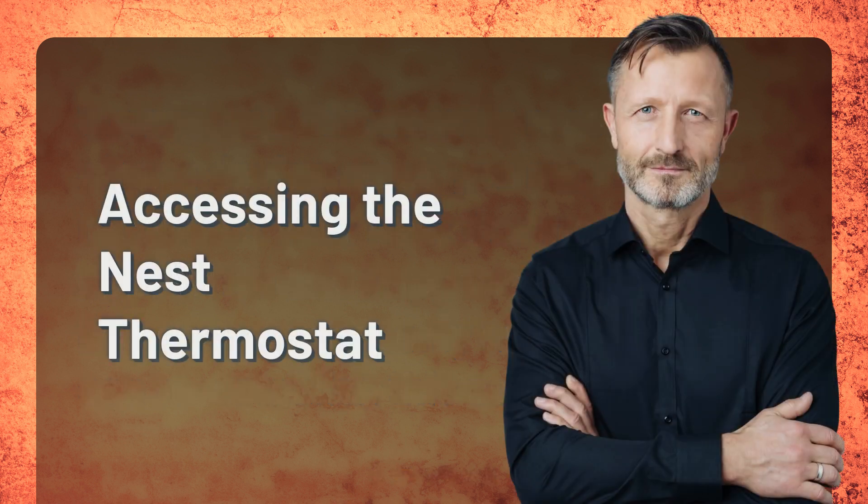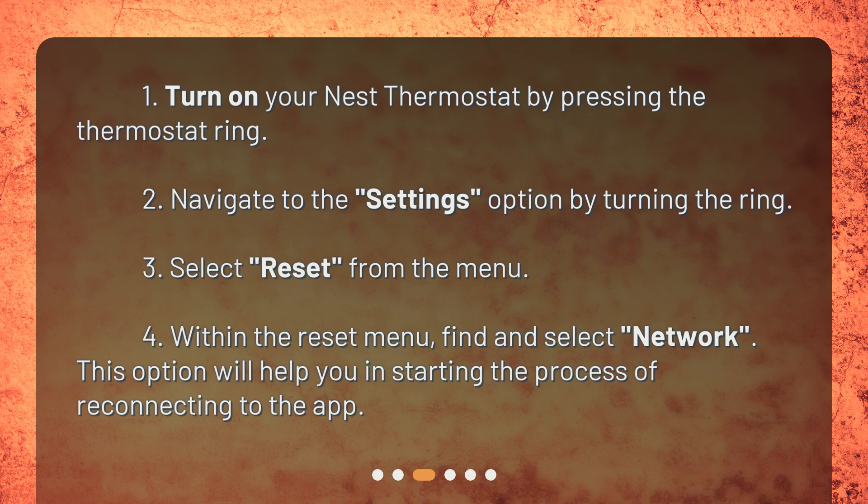Accessing the Nest thermostat: 1. Turn on your Nest thermostat by pressing the thermostat ring. 2. Navigate to the Settings option by turning the ring. 3. Select Reset from the menu. 4. Within the Reset menu, find and select Network. This option will help you in starting the process of reconnecting to the app.